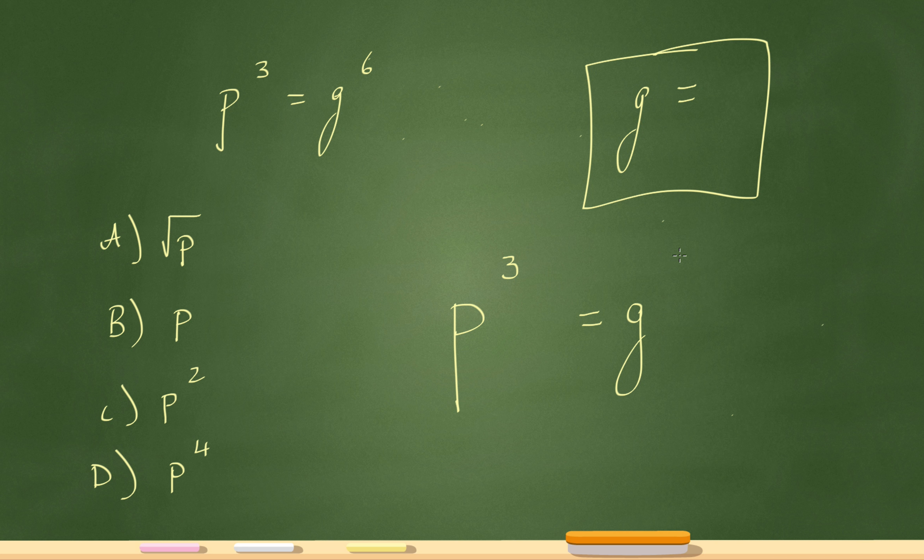P cubed equals g to the sixth, right? Like I said, I just want g by itself. So I want to figure out a way to get rid of that sixth. Remember, there's always an imaginary one there - we just don't write that one. So if I'm moving over here, multiply this by its reciprocal. Because if I multiply six times one-sixth, that actually gives me one. So that'll cancel out.